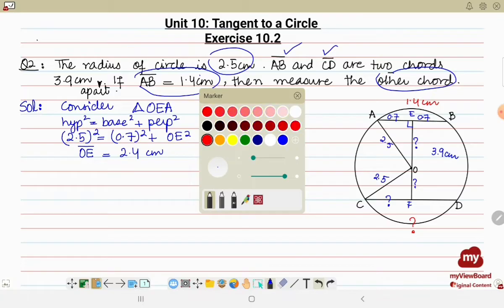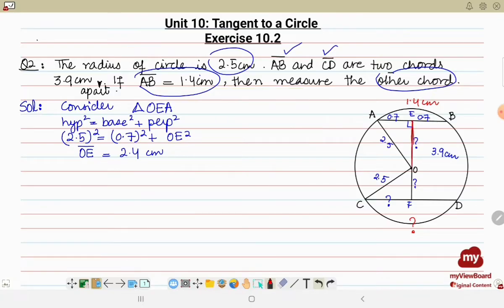So we have found out one value that is OE. Now to find out OF, we will write it down that EF is equal to EO plus OF.